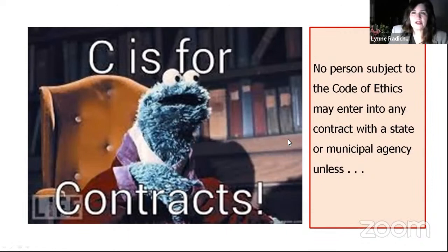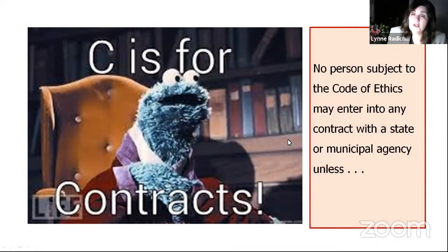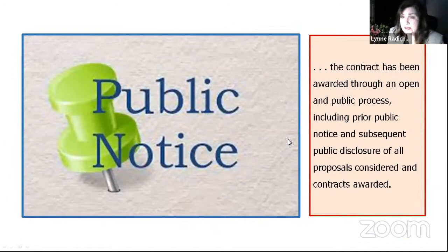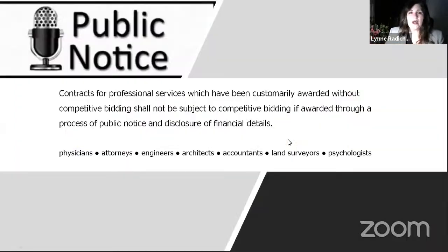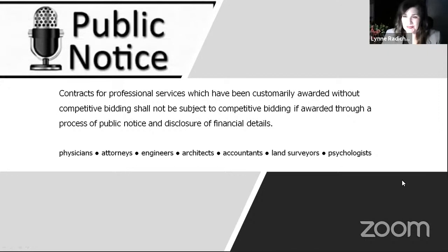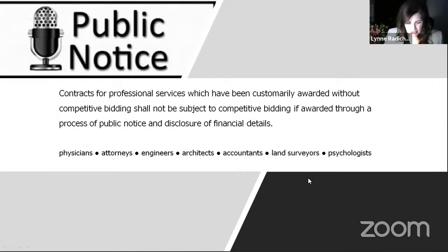On contracts: no person subject to the code may enter into any contract with a state or municipal agency unless it has been awarded through an open and public process, including prior public notice and subsequent public disclosure of all proposals considered and contracts awarded. Certain professional services — physicians, attorneys, engineers, architects, accountants, land surveyors, and psychologists — are customarily awarded without competitive bidding if done through a process of public notice and disclosure of financial details.